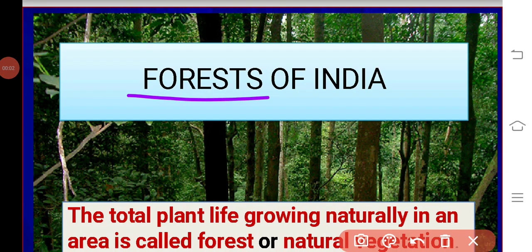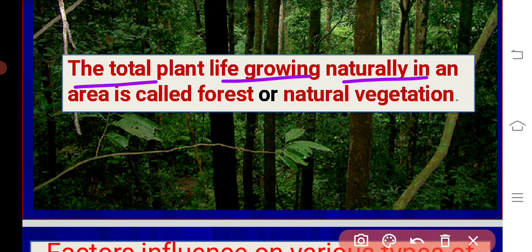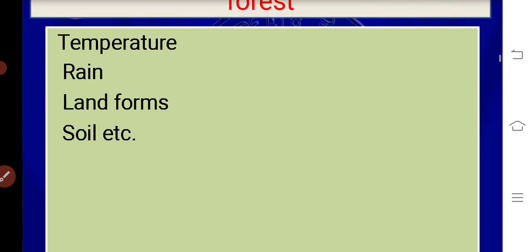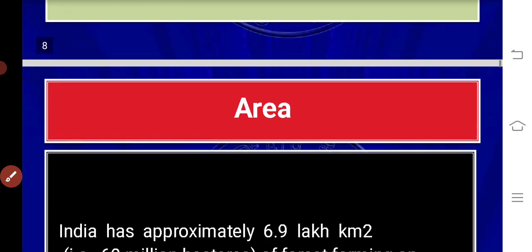Hi friends, welcome to my channel. Today in this video I will discuss about forests of India. It is one of the important lessons for the SLC board exam. By PPT I will teach in this video. The total plant life growing naturally in an area is called forest or natural vegetation. Four factors influence various types of forest: temperature, rain, landforms, and soil.